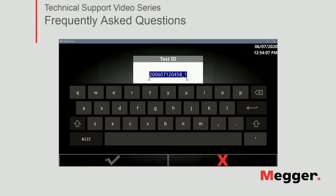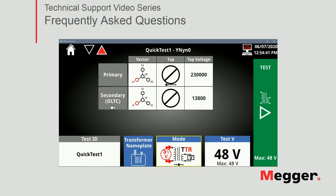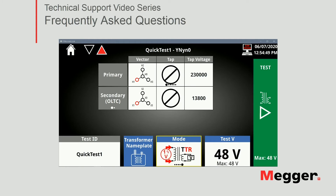Then I get to enter the test ID, so I'm going to use 'Quick Test One' and accept that. Then I can select the test mode. The first and default option is auto — I can click the button or tap it if I'm running on the unit. I also have three-phase step up, three-phase step down, single-phase step up, or single-phase step down. Notice that depending on the mode selected, the test voltage changes as well — there are certain limits for each test mode. If I go to auto, the test voltage becomes inactive, so the instrument will select the best test voltage for the transformer I'm testing.